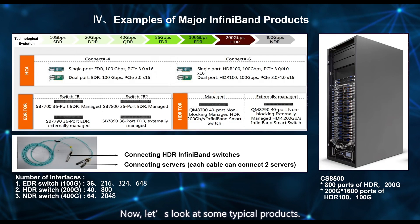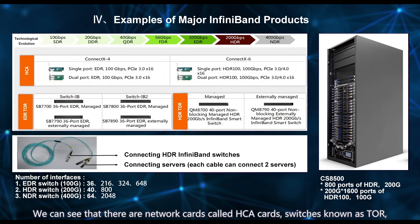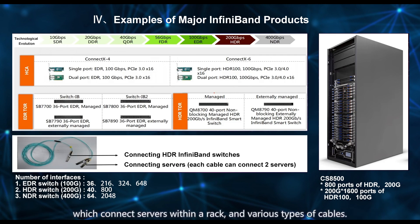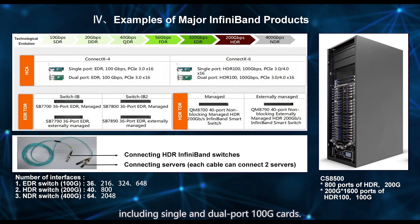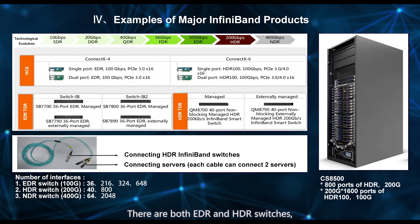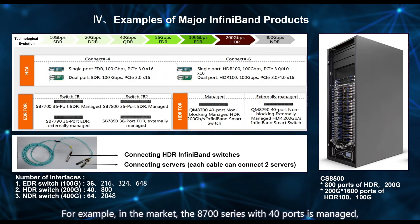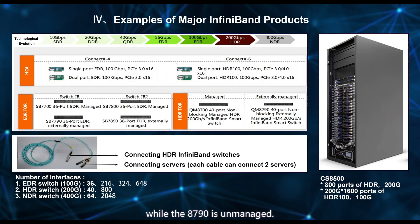Now let's look at some typical products. We can see that there are network cards called HCA cards, switches known as TOR which connect servers within a rack, and various types of cables. Currently, the main types of network cards are EDR and HDR, including single and dual-port 100G cards. The CX-6 mainly supports HDR, while the CX-4 supports EDR. There are both EDR and HDR switches, and they come in two types: manageable and non-manageable. For example, in the market, the 8700 series with 40 ports is managed, while the 8790 is unmanaged.